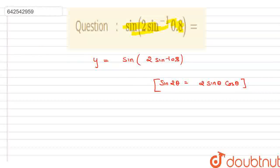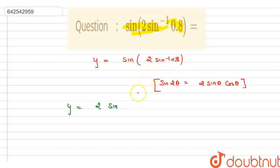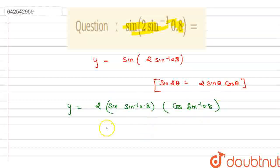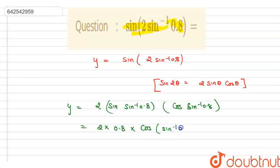By applying this formula, this value will be equal to y = 2·sin(sin⁻¹(0.8))·cos(sin⁻¹(0.8)). The sine cancels out, giving us 2 × 0.8, which is 1.6, multiplied by cos(sin⁻¹(0.8)).